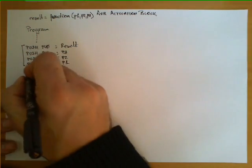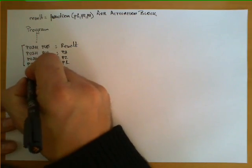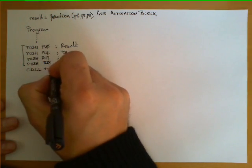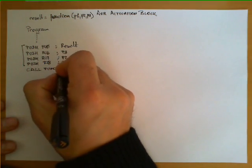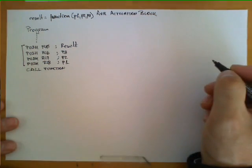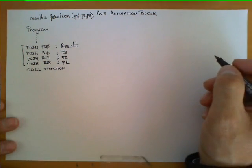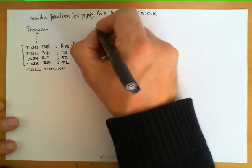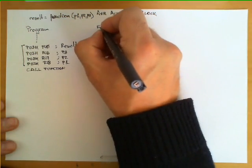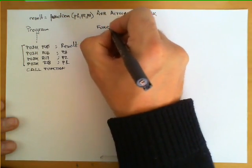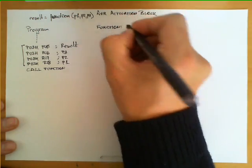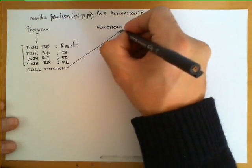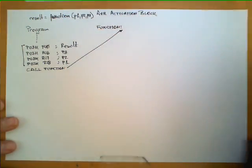After these four instructions, we call the function with the CALL instruction. We know that this will take the execution to the place where the function has been defined — in other words, to this first instruction.